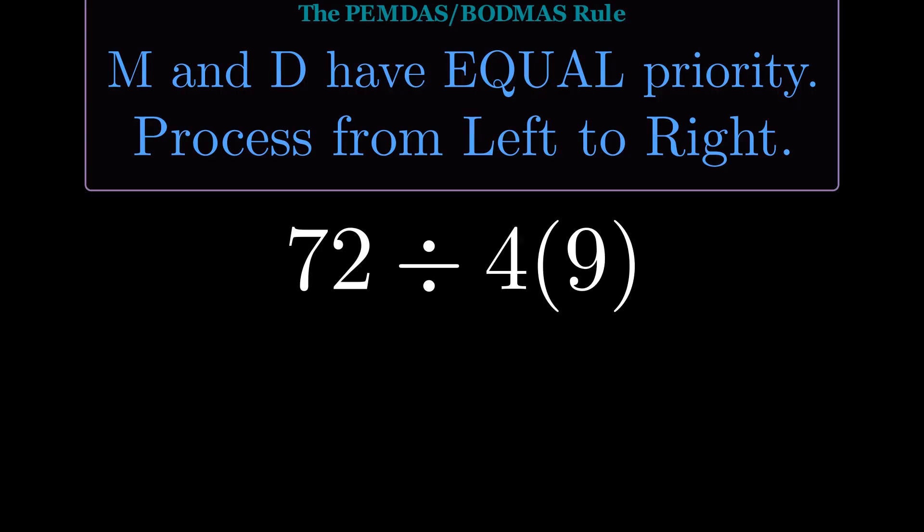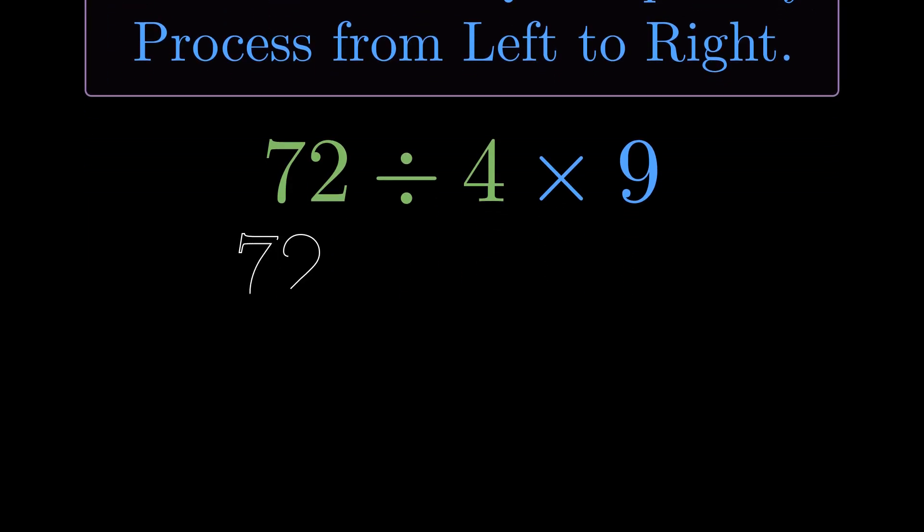Starting from the same place. Let me make the multiplication explicit. Now it's clear. We have 72 divided by 4 times 9. Following left to right, the first operation is 72 divided by 4.